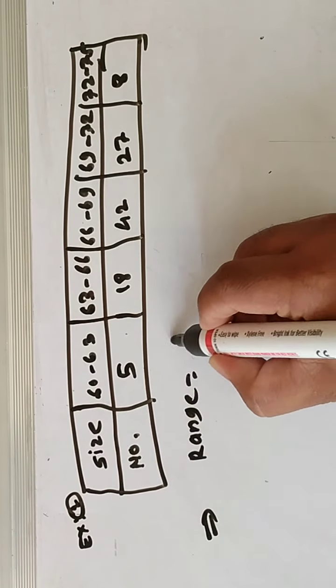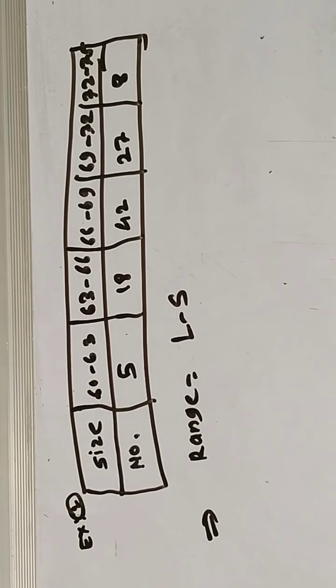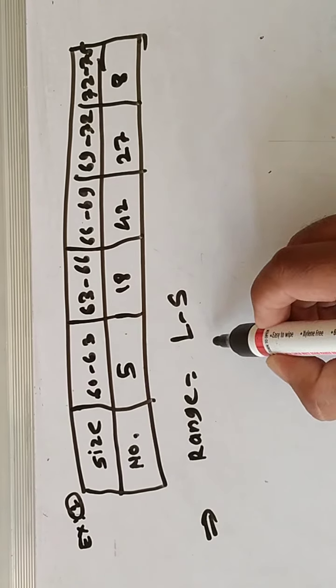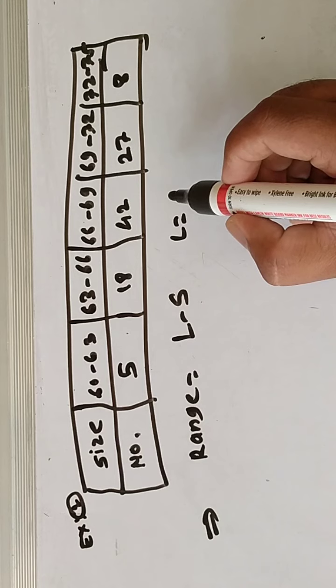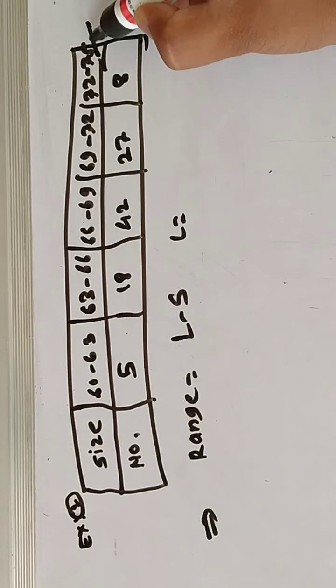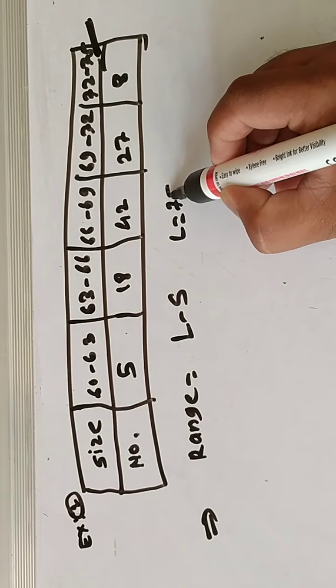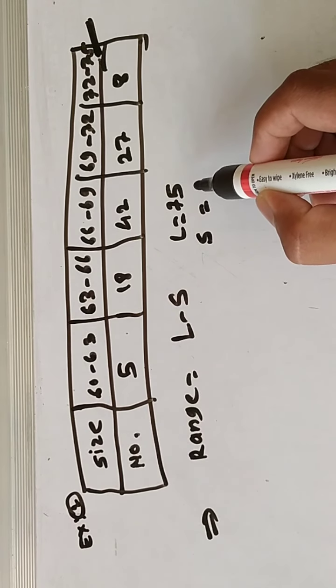equals L minus S. Here L means upper boundary of the highest class. L equals 75, upper boundary of the highest class. And S means lower boundary of the lowest class, that is 60.